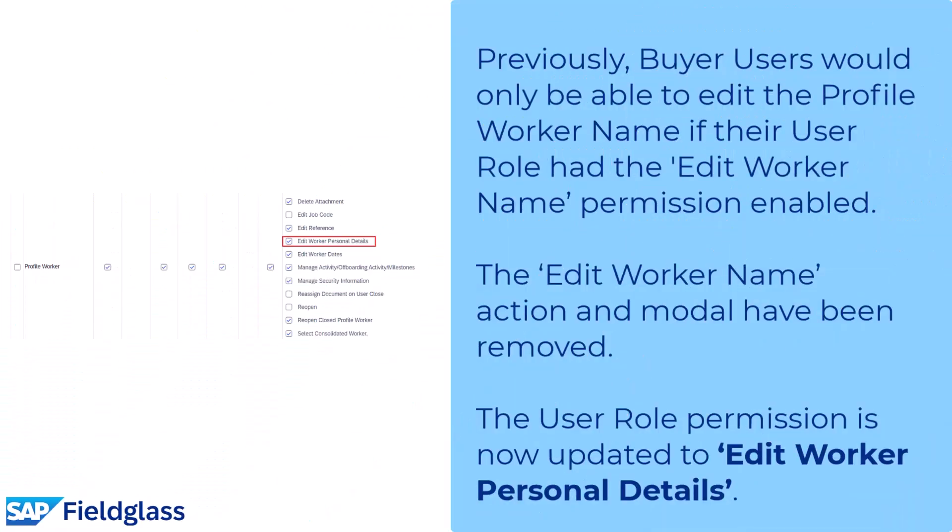Previously, buyer users would only be able to edit the Profile Worker Name if their user role had the Edit Worker Name permission enabled, but that action in modal had been removed. The user role permission is now updated to Edit Worker Personal Details, as seen in the image of a user role being edited.